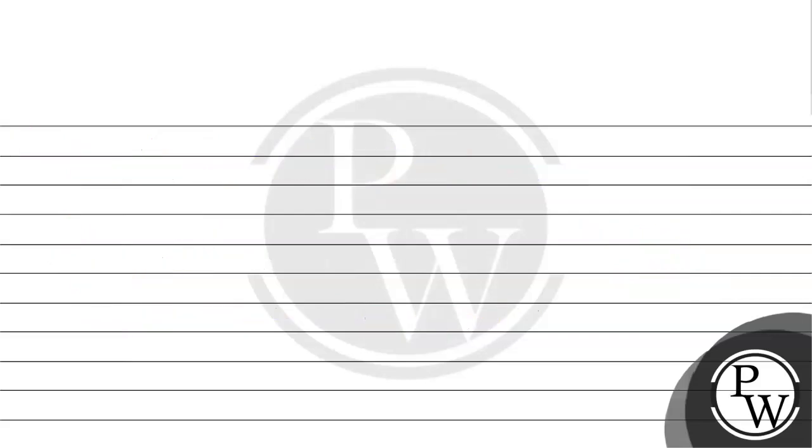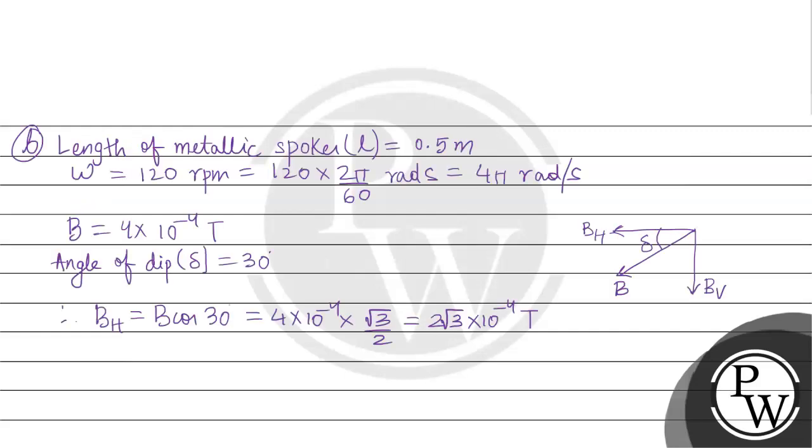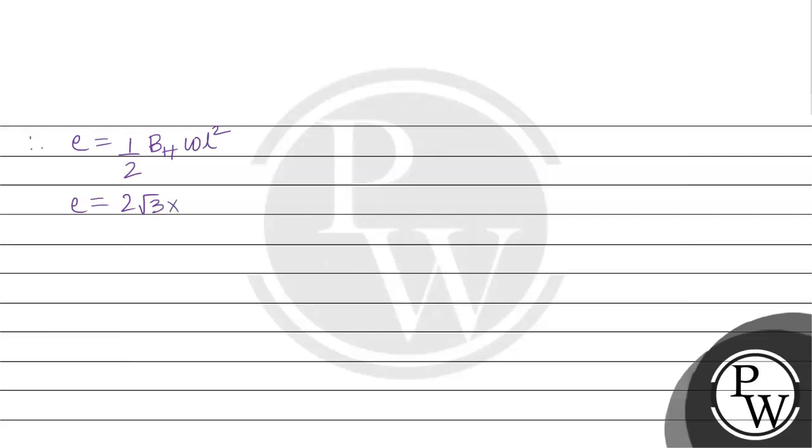Therefore, the EMF induced equals half B horizontal omega L squared. That's half times 2 root 3 times 10 to the minus 4 times 4 pi times 0.5 squared. E value equals 1.732 times 4 times 3.14 times 0.25 times 10 to the minus 4, which is 5.4 times 10 to the minus 4 volts.